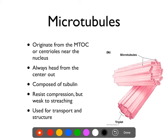Microtubules are the largest of the three structures. They're made out of tubes, but not just one tube — they're an arrangement of nine tube triplets arranged in a circle, and that's what makes up a microtubule complex. Each of these tubes itself is made up of a number of strands of proteins.